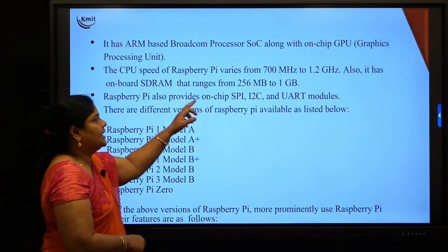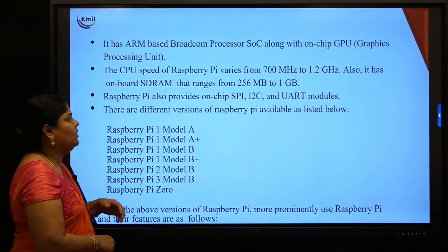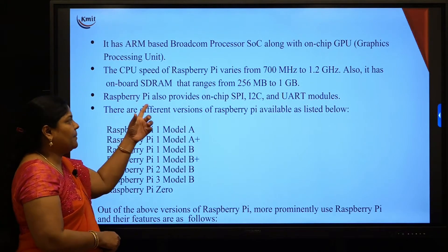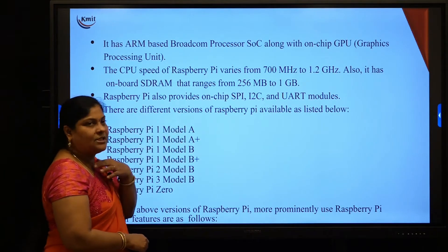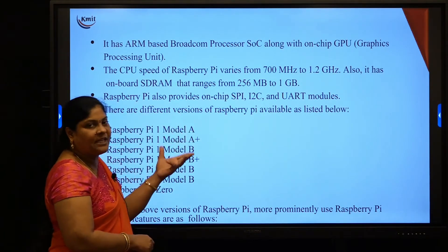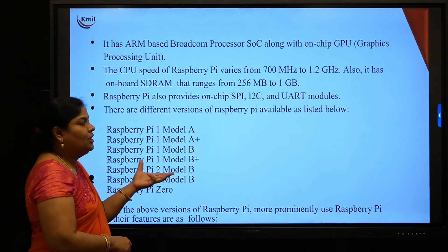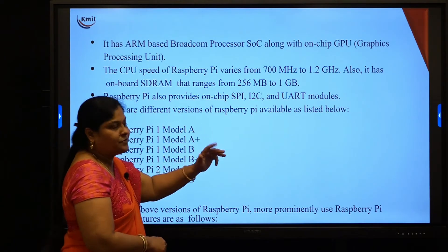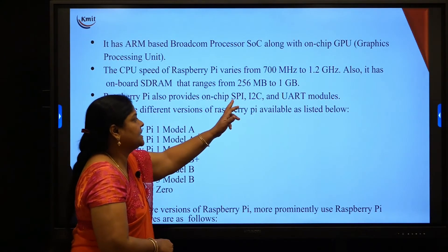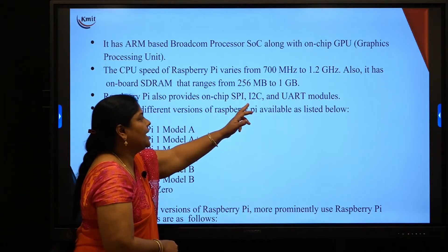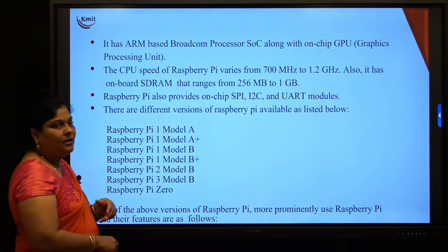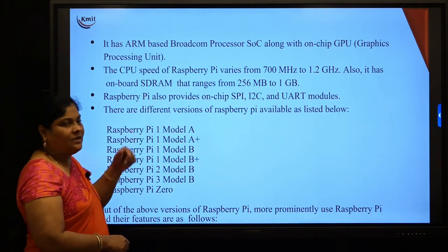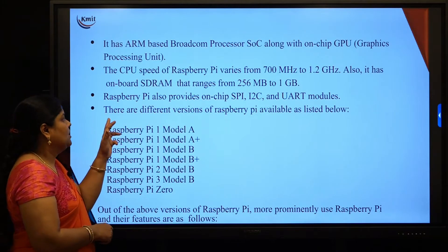The CPU speed of Raspberry Pi varies from 700 MHz to 1.2 GHz, and it has onboard SDRAM ranging from 256 MB to 1 GB. Raspberry Pi also supports different types of on-chip serial communication: SPI, I2C, and UART modules. This topic will also be extended in the next sessions.